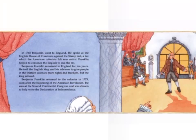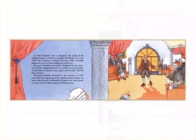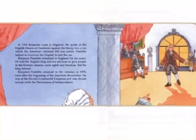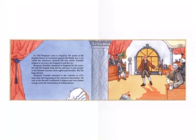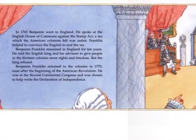Benjamin remained in England for 10 years, telling the English king and his advisors to give people in the 13 colonies more rights and freedoms. But the king refused. Finally, Benjamin Franklin returned to the colonies in 1775. Soon after the beginning of the American Revolution, he was at the Second Continental Congress and was chosen to help write the Declaration of Independence. The American Revolution was when the 13 colonies fought a war against England to earn their freedom, and the Declaration of Independence was a document telling England 'we want to be free.'